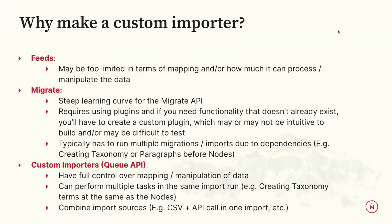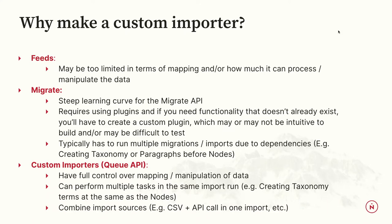Then there's the Migrate API. I find it has a very steep learning curve — there's a lot of knowledge to funnel into your brain. I even have a coworker who does almost exclusively migrations and there are still things she has to look up. Anyone who's mastered it, hats off to you. You can use and make plugins, but they may not be intuitive. Also, you typically have to run multiple migrations due to dependencies — if you want a node that references a taxonomy, paragraph, or media, you have to make all those dependencies first.